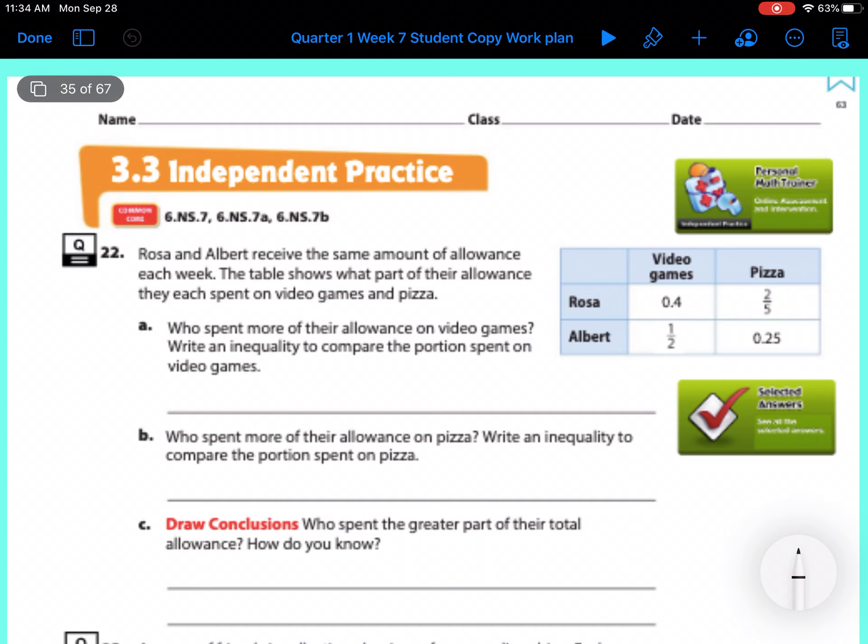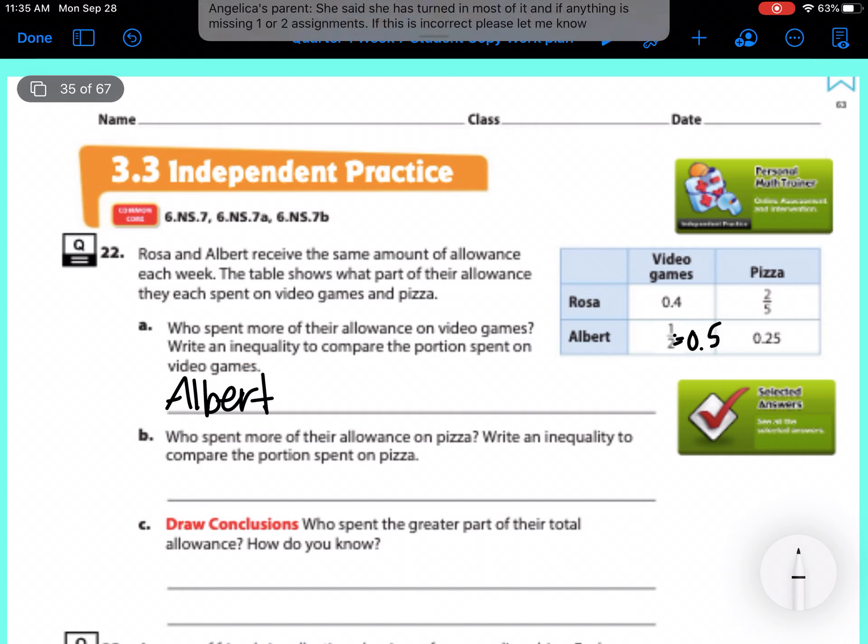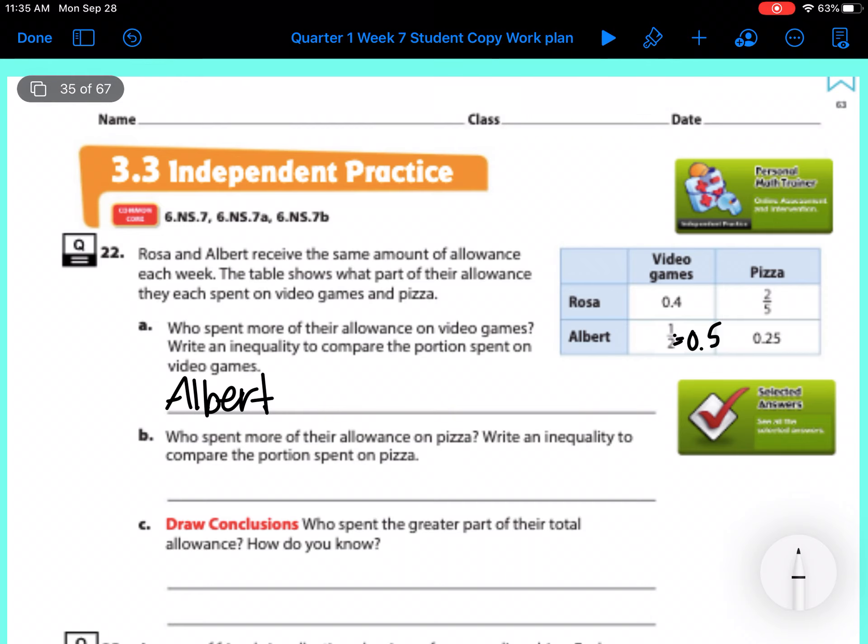So Rosa spent 0.4 of her allowance and Albert spent one half. So we need to change them both to decimals or fractions. Let's do decimals because it's so much easier. One half is the same as 0.5. So which is more, 0.4 or 0.5? So Albert spent more because 0.5 is larger. And then what you're going to do is one half is greater than 0.4. That was super easy.